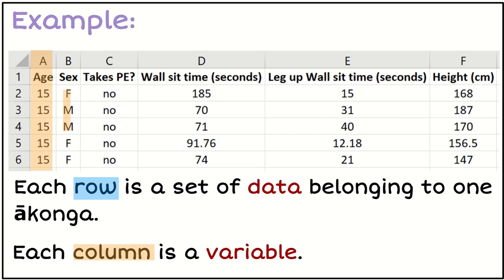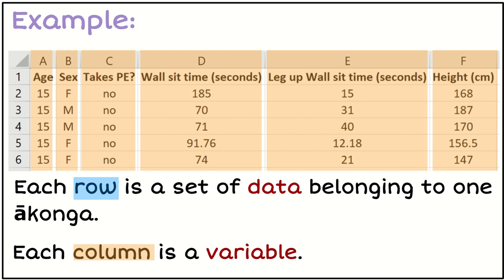Then each column that we talk about, that is a variable. In this case, I've got a range of different variables: the age of the people, the sex of the Akonga, whether or not they take PE. Each column is a variable.